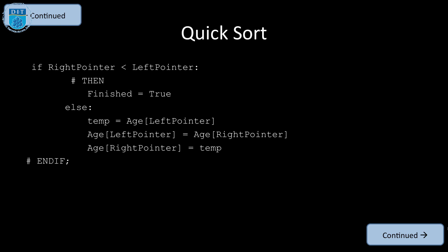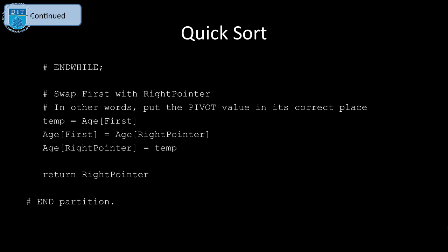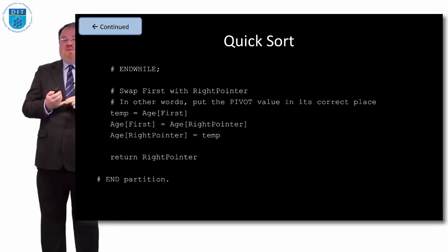Once we've done all that, then we do our final swap which is of the pivot with itself in its correct position. So that's quick sort.